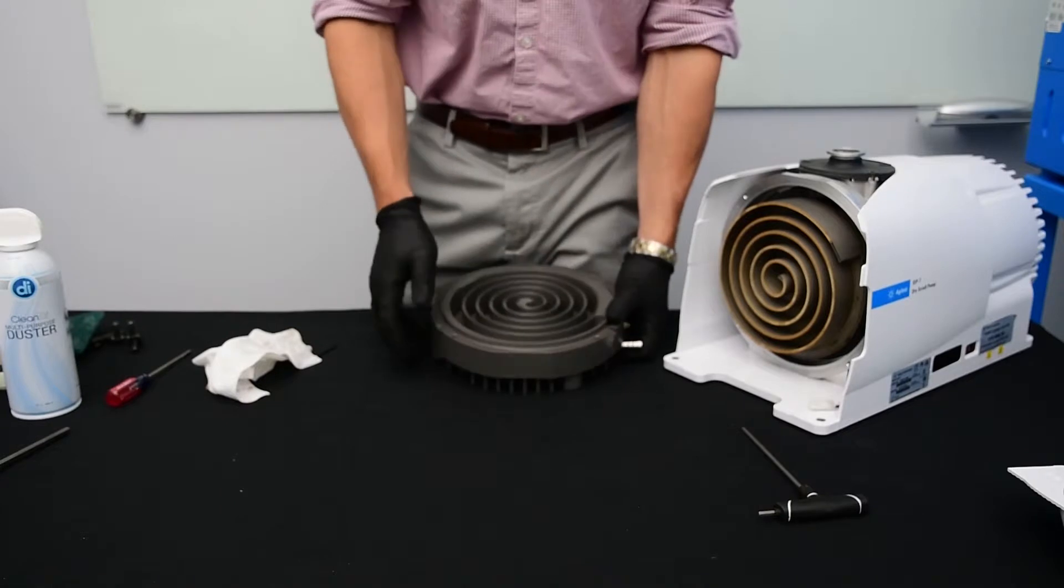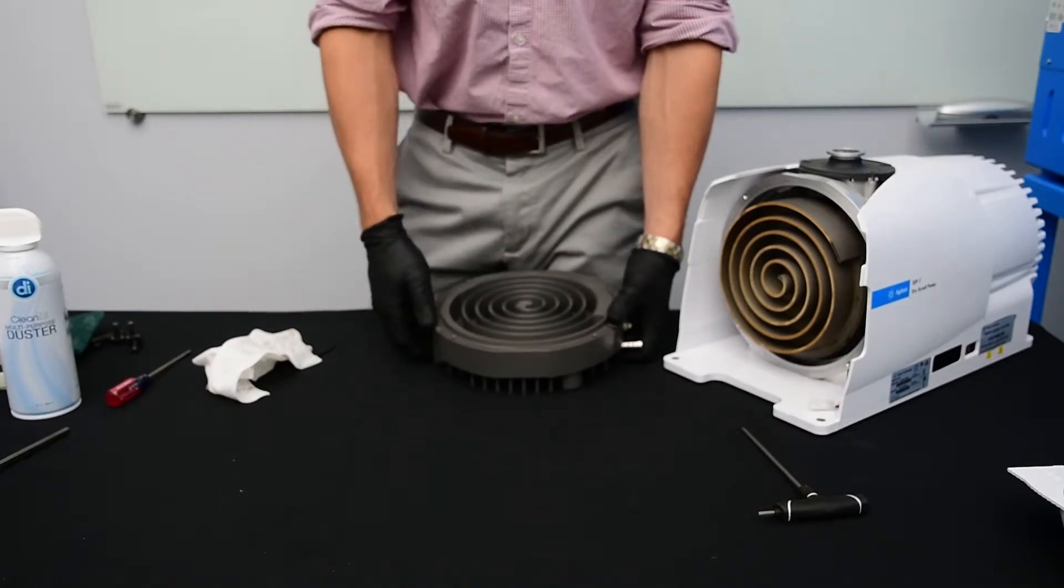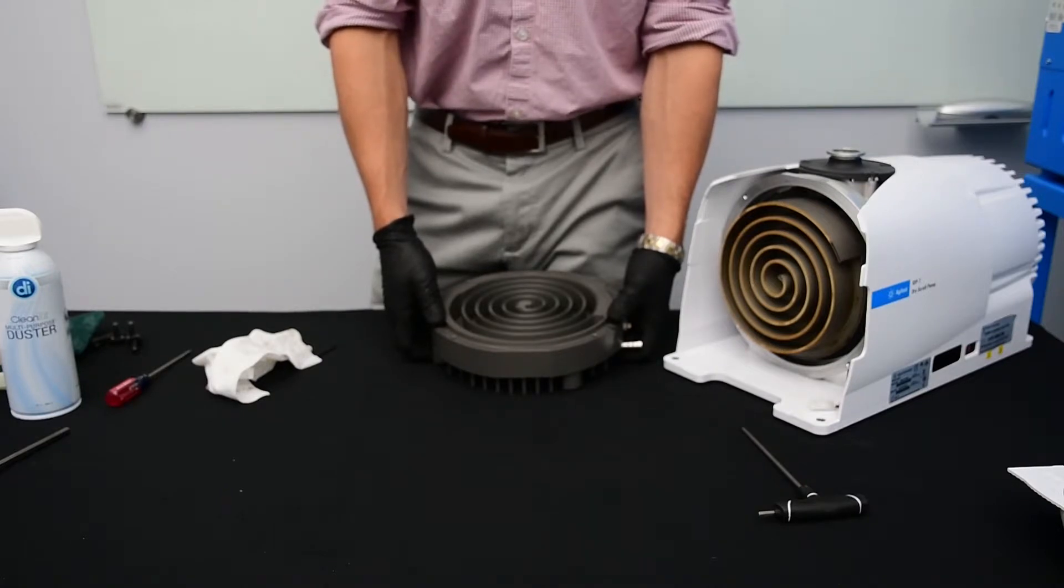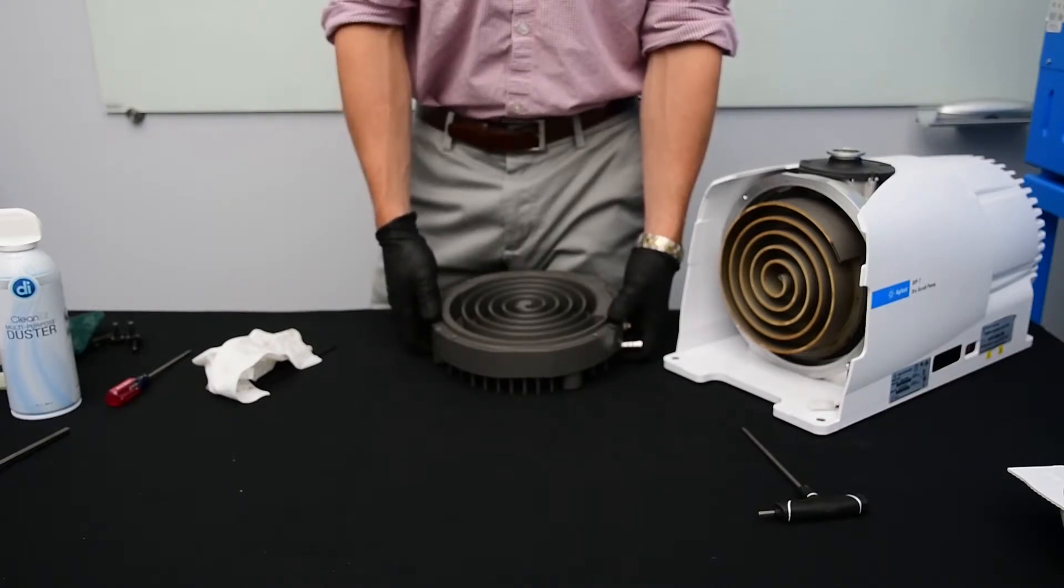Now that we've finished the outboard housing, we're going to move on to the orbiting plate of the scroll. We'll follow the same procedure to change the tip seal and clean the pump on that side as well.